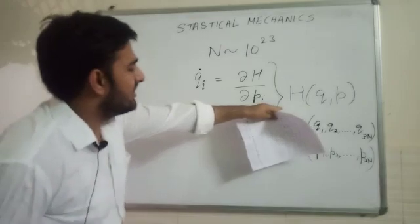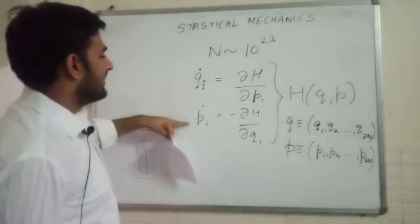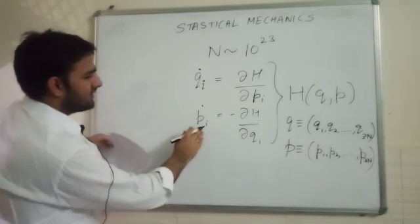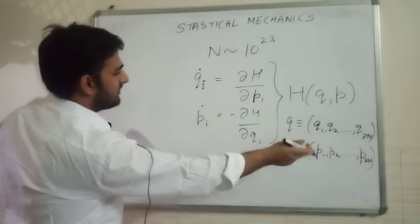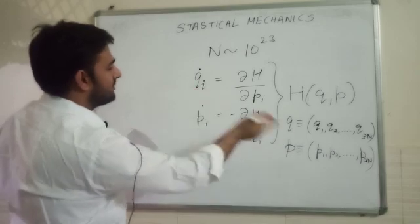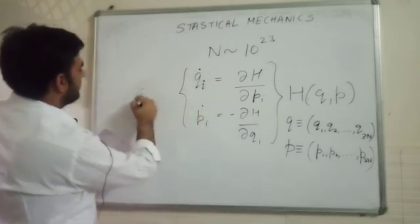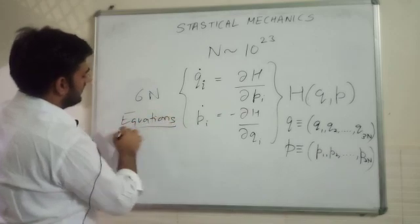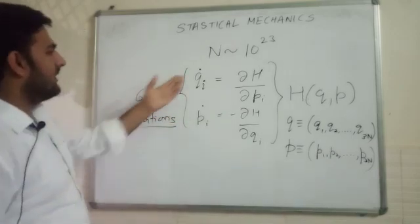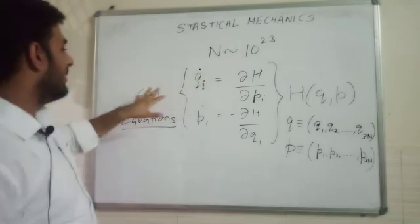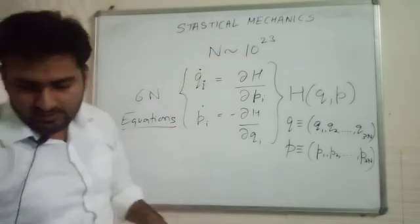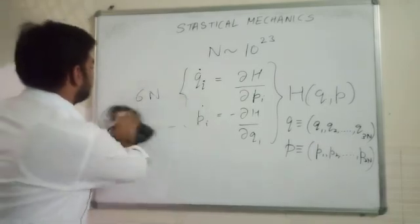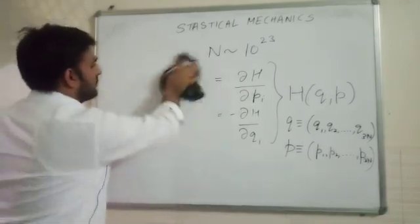So, given the Hamiltonian of the system, we can use these 6N equations, because i goes from 1 to 3N and this i goes from 1 to 3N. So there is a total of 6N equations. So, for N equals 10 to the 23, that's a lot of equations to solve. And that's clearly impossible even for our modern computers. So, what will we do now?